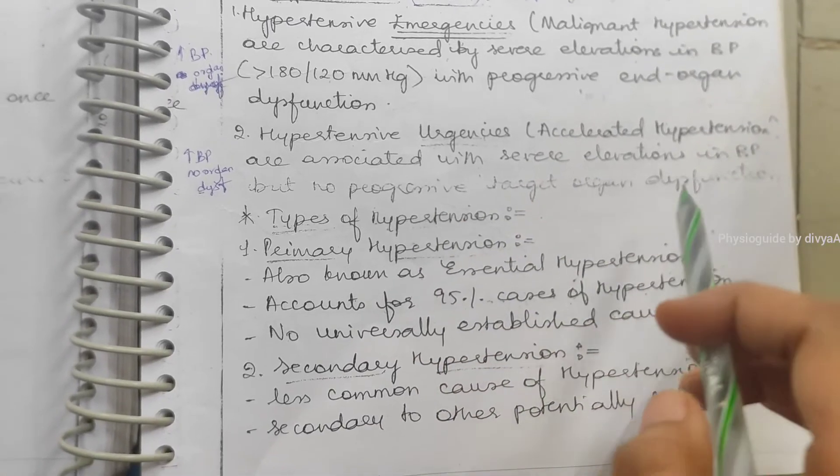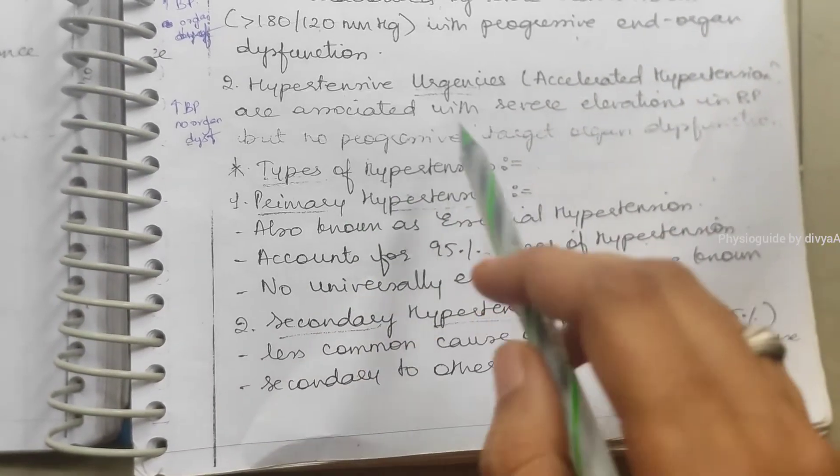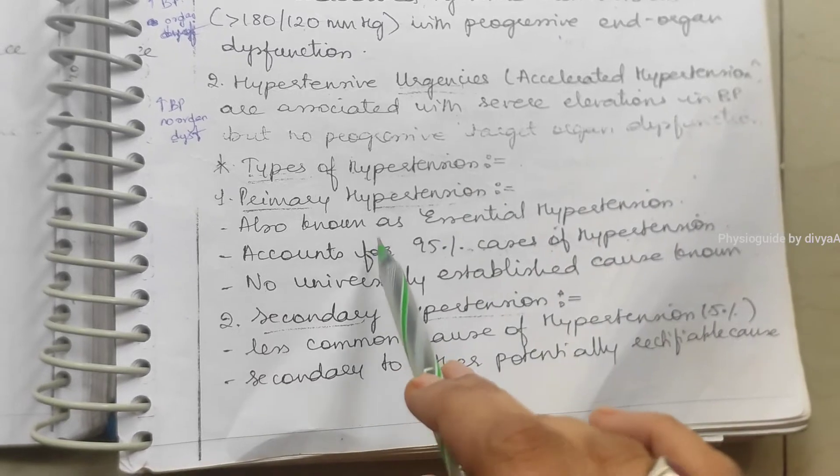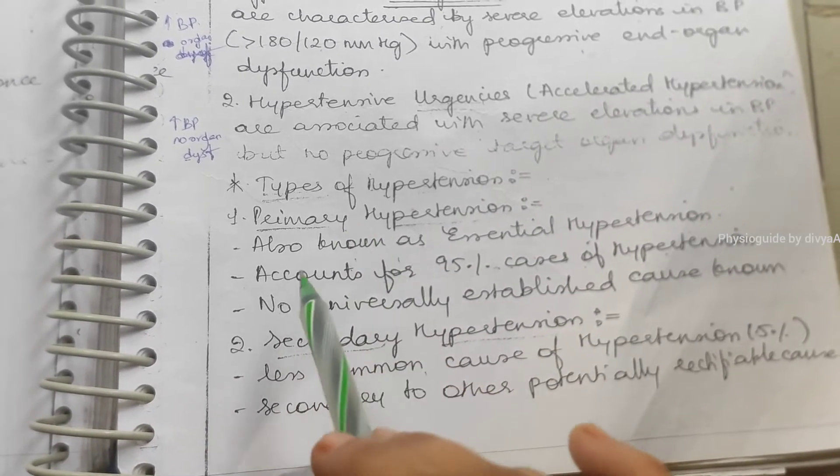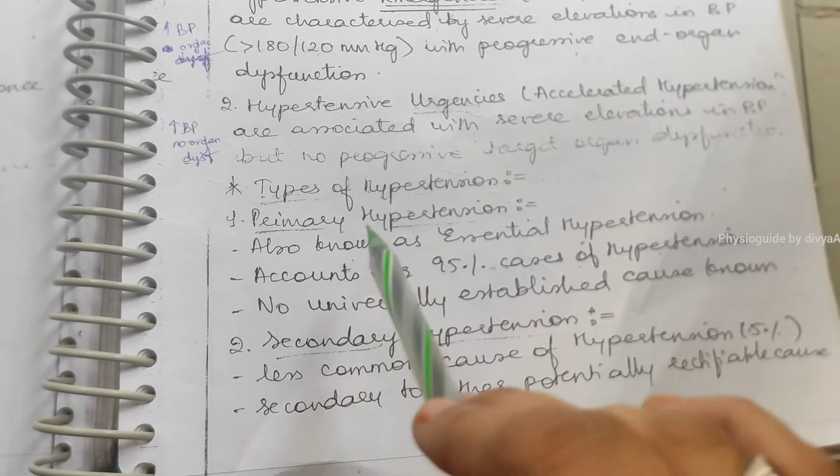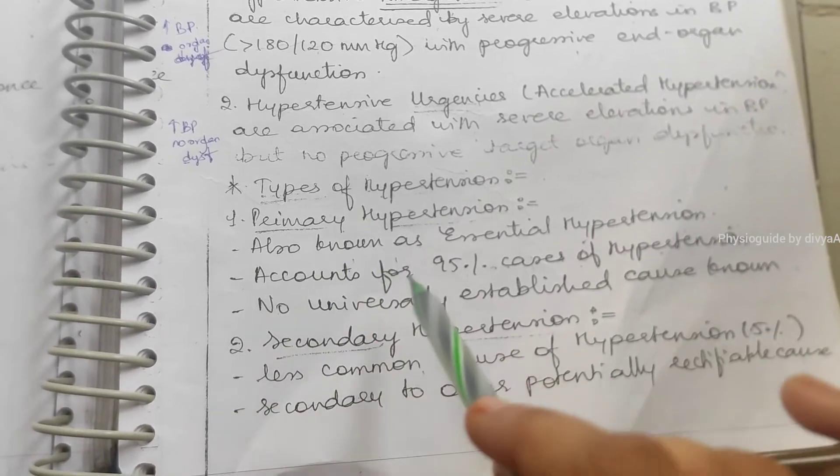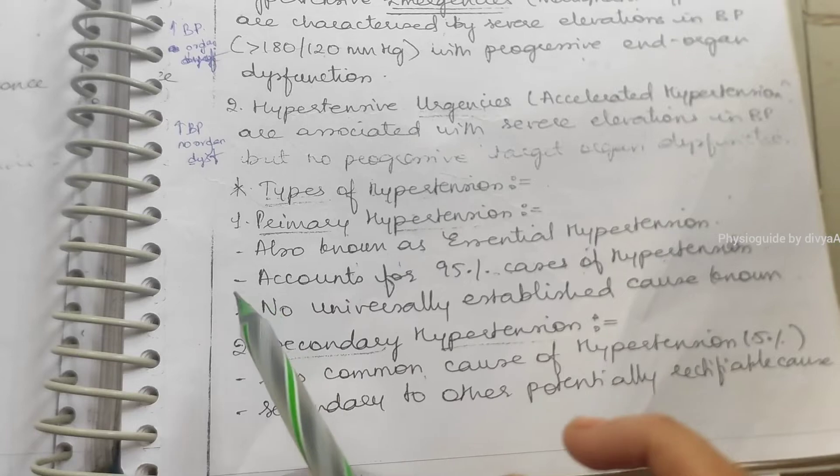What are the types of BP? Primary and secondary. Primary, also known as essential hypertension, is the main hypertension. It accounts for 95% of causes of hypertension patients. No universally established cause is known.